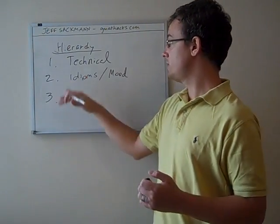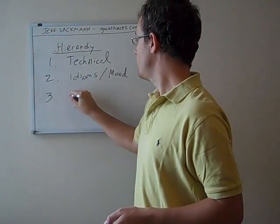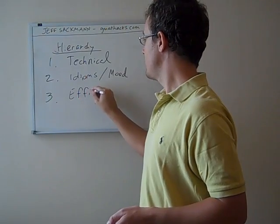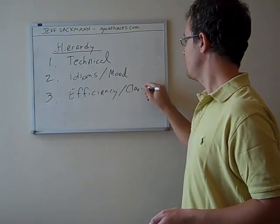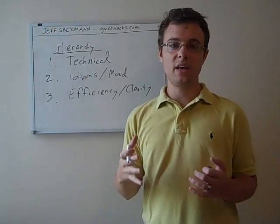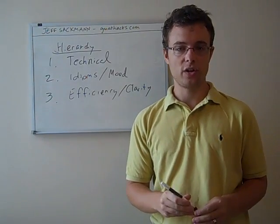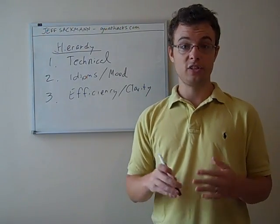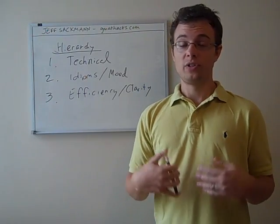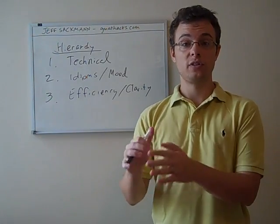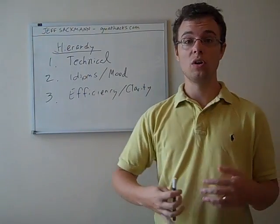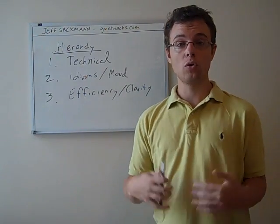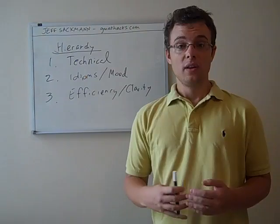Now, this same logic extends to the third level of the hierarchy, which is basically everything else. Things like efficiency and clarity. When you read the explanations to sentence correction questions in GMAT guidebooks, especially the official guide, which has some great practice material, the explanations will refer to some wrong answer choices as simply being inefficient or unclear or having poor rhetorical construction.